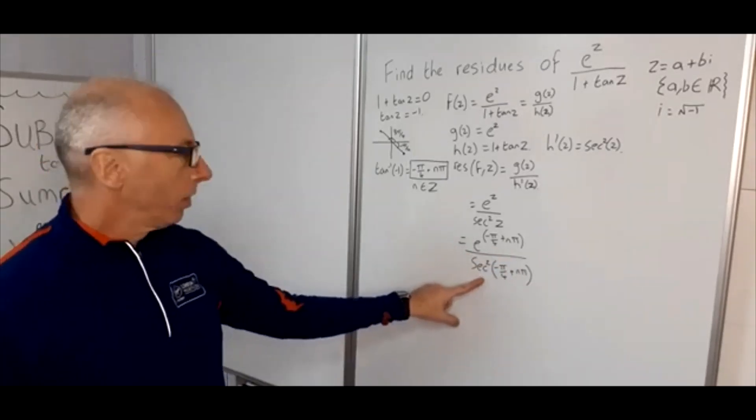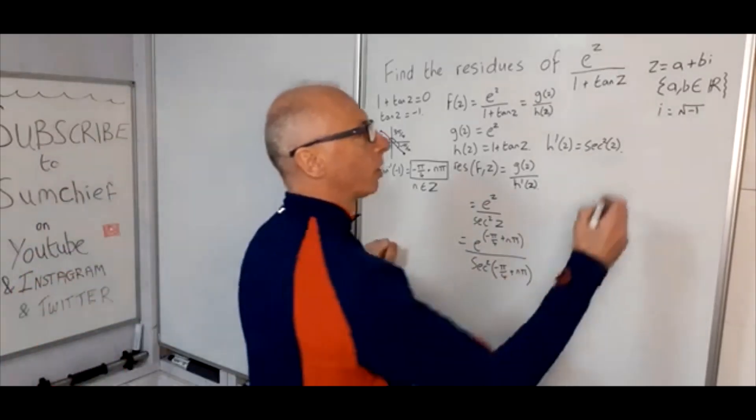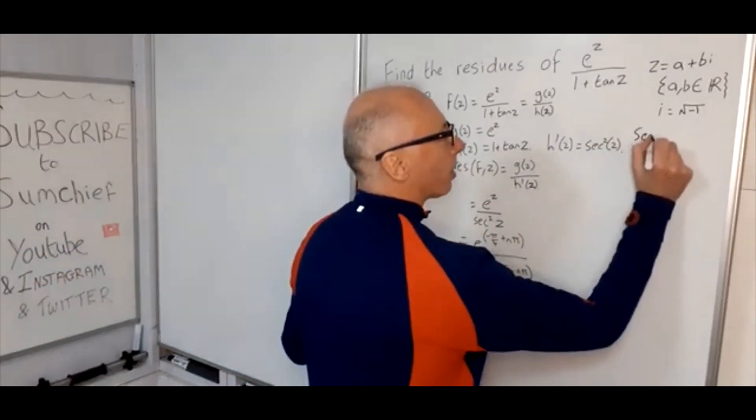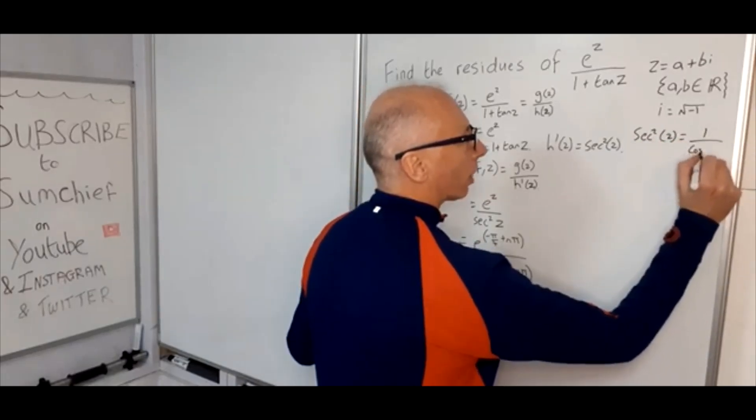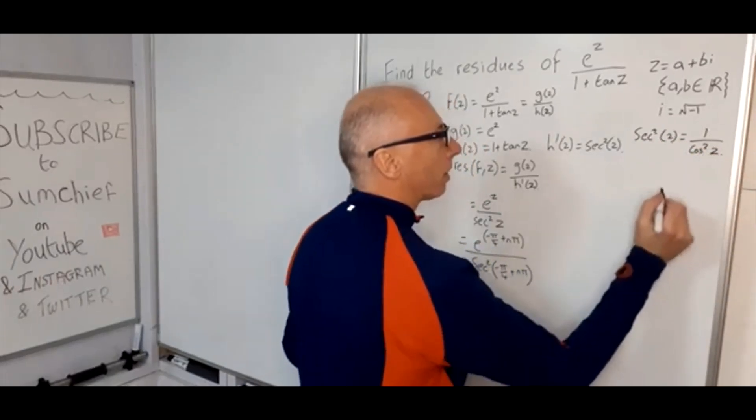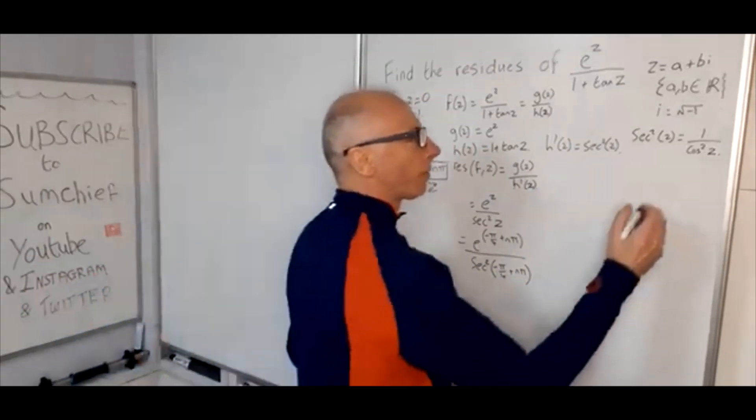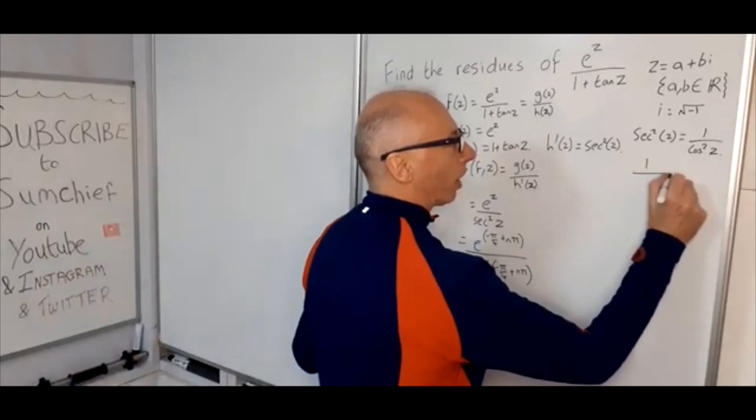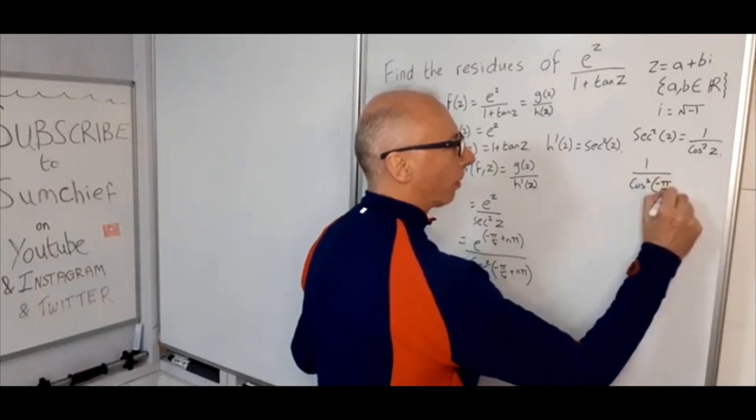So sec²—let's have a look at that, and let's just in particular look at minus π over 4. So we know sec²(z) equals 1 over cos²(z). So plug it in: minus π over 4. So we've got 1 over cos²(-π/4).